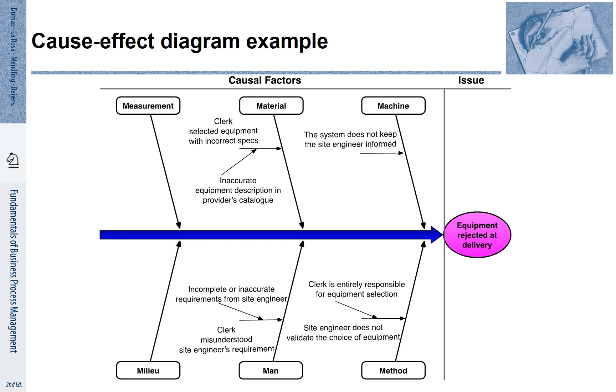There could also be an explanation in the category machine. Machine also involves computing machinery, that is information technology and systems. The system does not keep the site engineers informed. That could be the explanation here.